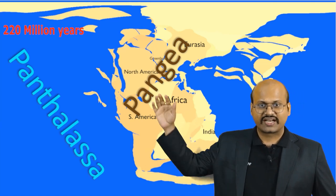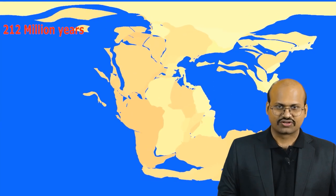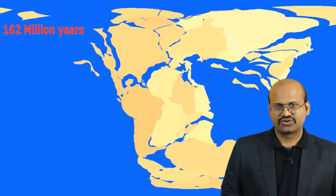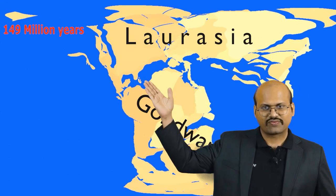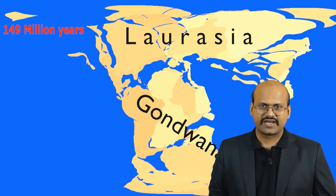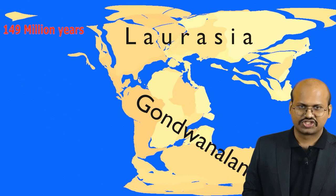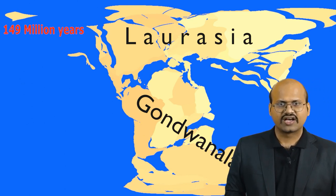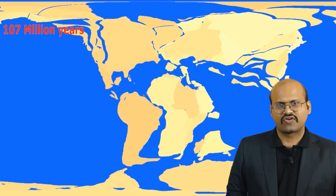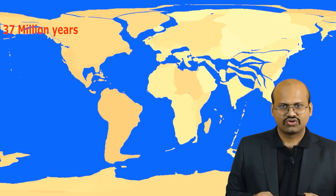The ocean that surrounded Pangaea was called Panthalassa. Around 200 million years ago, Pangaea started to break and got divided into two parts. The northern part was called Laurasia, which included Asia, Europe and North America, while the southern part was called Gondwanaland, which included South America, Africa, India, Australia and Antarctica. Laurasia and Gondwanaland further broke down to form the continents as we know them today.